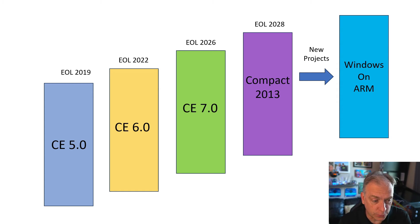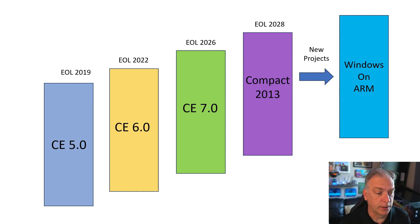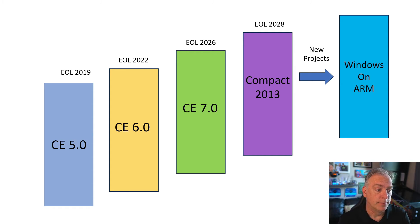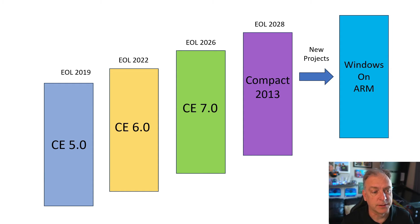What you can do is use downgrade rights. Microsoft changed the downgrade rights rules so that now you have to go to the latest, most current version of a product, buy that sticker, and then you can continue to load the old software. If you need to load CE 5, CE 6, or CE 7 you can still do that today — you just have to buy the most current product. CE 7 is still available, so if you're loading CE 7 you buy CE 7; if you're loading Compact 2013 you buy Compact 2013.